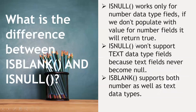What is the difference between IS BLANK and IS NULL? This is a very commonly asked admin interview question. IS NULL works only for number data type fields — if no value is populated in a number field, IS NULL returns true. IS NULL does not support text data type fields because text fields never become null. IS BLANK, on the other hand, supports both number and text data types.